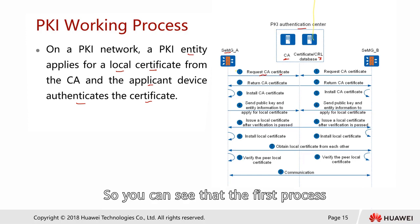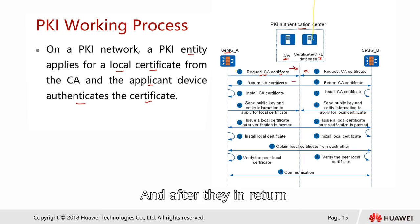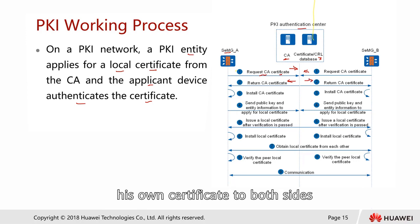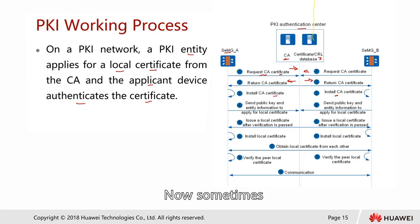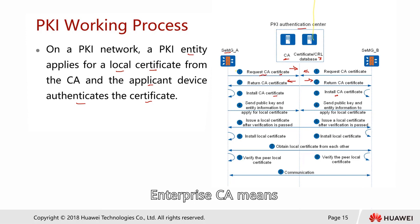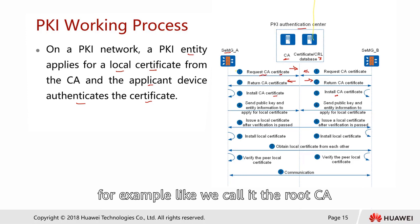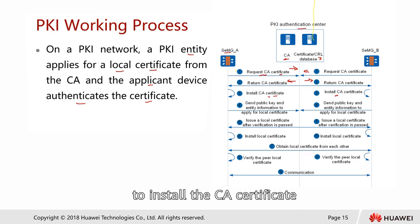I want to know who you are first. So you can see that in the first process — look at the arrow here — both of them actually request for a certificate. And in return, the CA sends its own cert to both sides. After that, they will install the CA certificate. Sometimes it could be an enterprise CA, it could be a public CA. Enterprise CA means that organization has their own root CA. You need to perform this process to install the CA certificate.